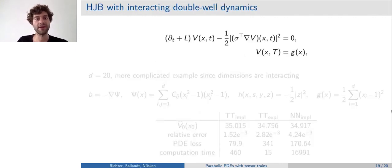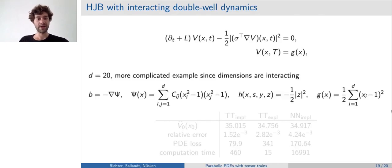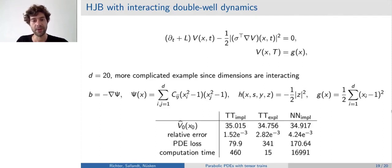Another example is a little bit more complicated. It's still a Hamilton-Jacobi-Bellman PDE. But now instead of the Laplace, we have this diffusion operator L in here. And this L also contains the drift B, which in our case is the negative gradient of potential Psi. The Psi is written down here. So it essentially has interaction between the dimensions because this matrix C here is non-diagonal. We consider the dimension 20 and have again this quadratic nonlinearity. We again compare tensor-trains with neural networks. And here you can see that the relative error is pretty comparable, maybe a little bit better for the tensor-trains. And also the PDE loss is quite a bit better for the implicit tensor-trains scheme.